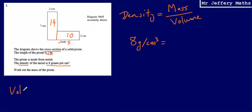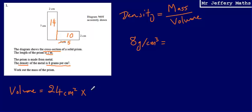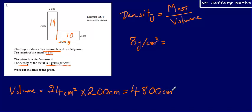The volume is going to be 24 centimetres squared multiplied by the length. I need to be careful here — the length of the prism is 2 metres, but I've calculated the area in centimetres squared, so I need to multiply by the length in centimetres as well. So I'm multiplying 24 centimetres squared by 200 centimetres, which gives an answer of 4,800 centimetres cubed.